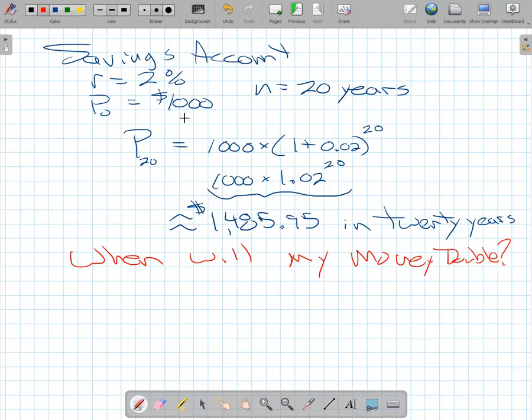All right. So we started with 2%, putting $1,000 in there. In 20 years, we calculated we'd have almost $1,500.